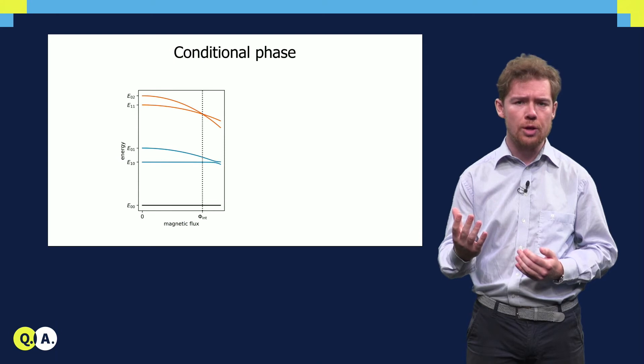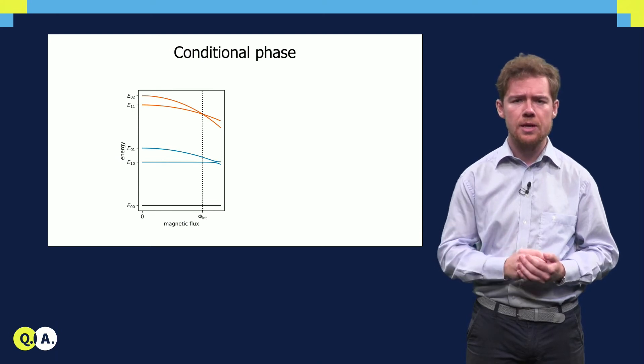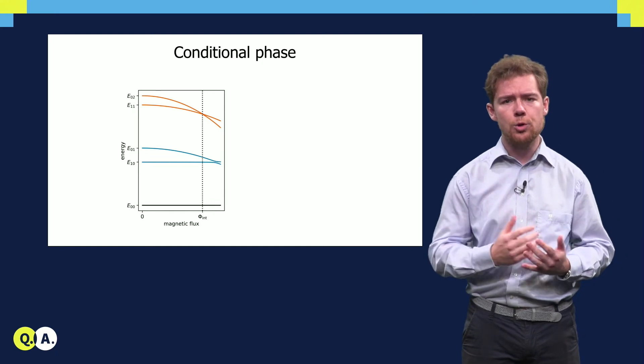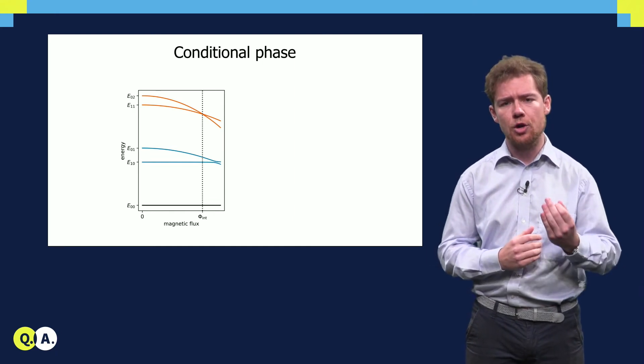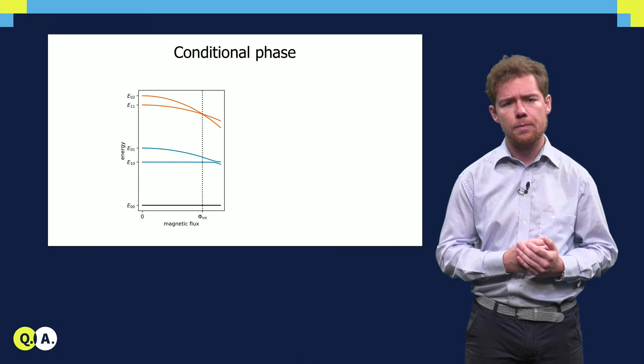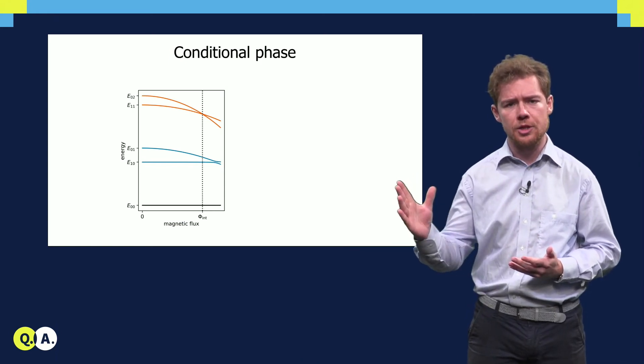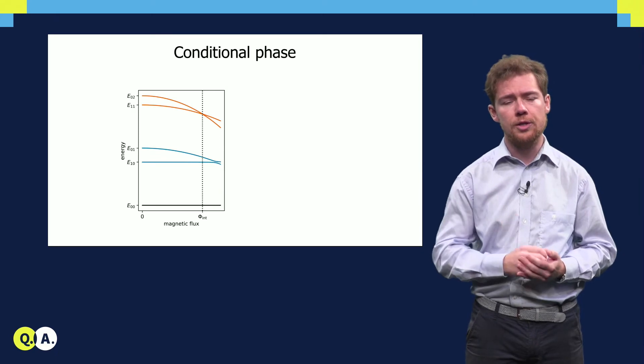To understand how this flux control can be used to perform a c-phase gate, let us take a look at the level diagram of two transmon qubits as a function of the flux through the target qubit. In this level diagram, the subscripts denote the number of excitations in the control and target qubit respectively.